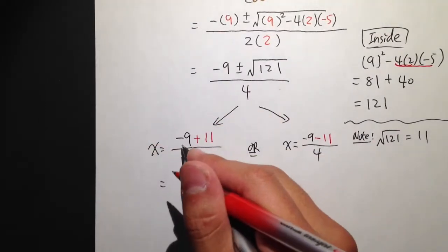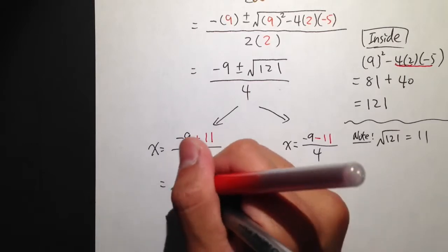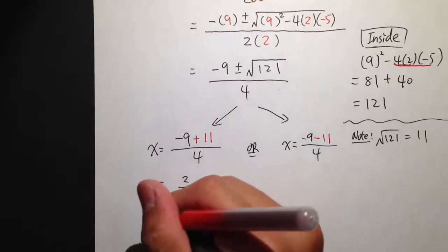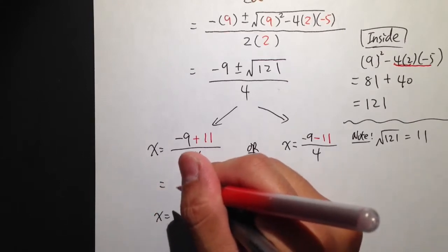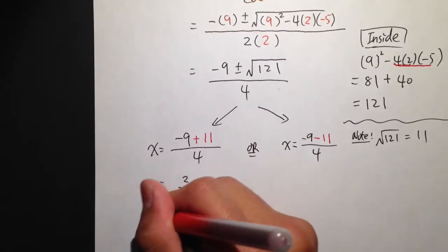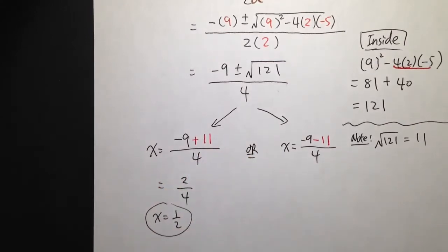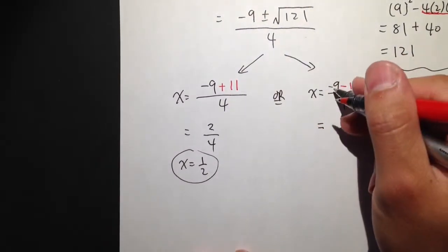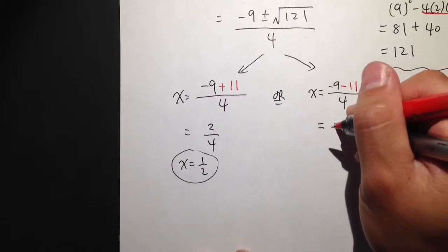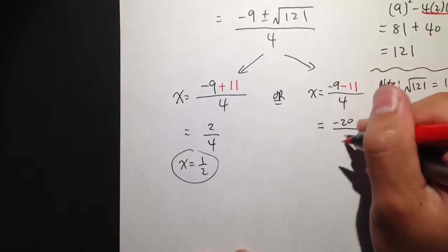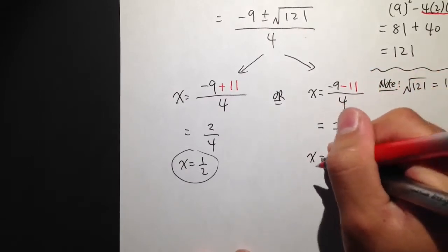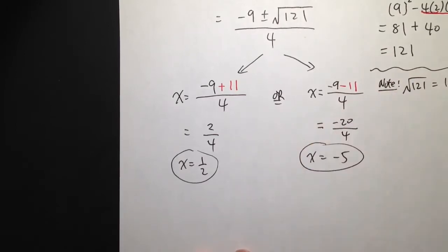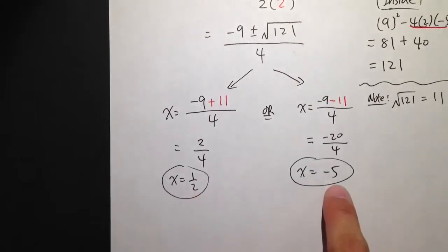For this one, negative 9 plus 11 on the top, we get positive 2 over 4 like this. And that's just x is equal to 2 over 4 which is 1 half, one of the answers. And then for the second one, we have equal to negative 9 minus 11 which is negative 20 over 4. x is equal to the result of this is negative 5. We get our answers.